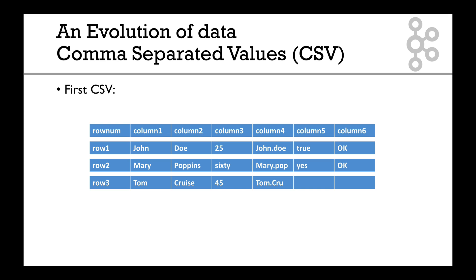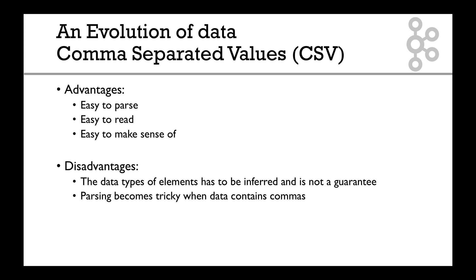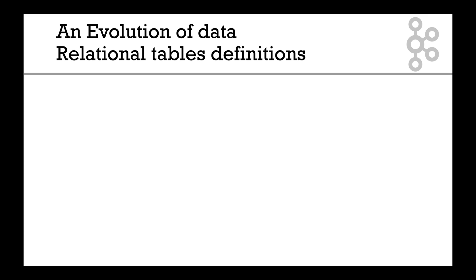Those are most likely problems you've already had with CSV. CSV's advantages are it's easy to parse, easy to read, and easy to make sense of. But its disadvantages are big: the data types of elements has to be inferred - you need to guess what column is what and it's not a guarantee. Parsing becomes very tricky when data contains commas. The column names may or may not be there.